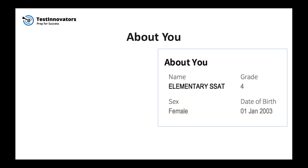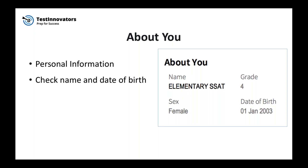First, let's look at the 'About You' section. Fairly self-explanatory, but there are a couple of things to make sure. The section contains your personal information, so make sure that your name and date of birth are correct, and also check to ensure that you registered using your current grade — not the grade you're trying to get into — which determines the test level that you took and the comparison or norm group for the SSAT percentiles.